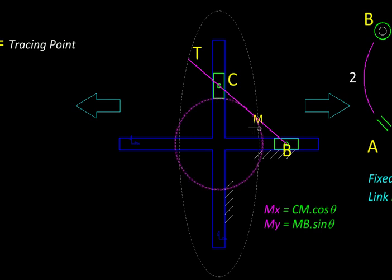For any other point on this purple link we will get a similar path, only the distances CM and MB were equal here and they will be unequal for any other point. So we will get a parametric equation that says x equal to A cos theta and y equal to B sin theta. Equation of an ellipse.